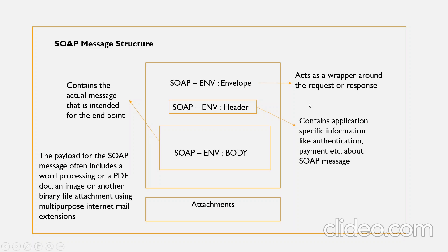These XML messages have a defined structure called a SOAP message. The SOAP message consists of an envelope, header, and body. The envelope acts as a wrapper around the request or response. The header contains application-specific information like authentication and payment details. The body contains the actual message intended for the endpoint. Attachments — the payload — often include word processing documents, PDFs, images, or other binary files using Multipurpose Internet Mail Extensions. Every SOAP message must follow this particular structure, which is one of the specifications.